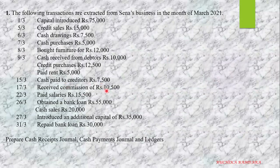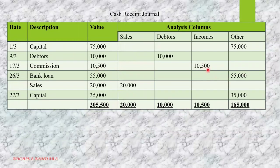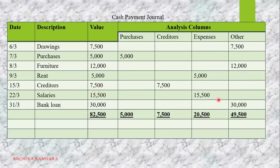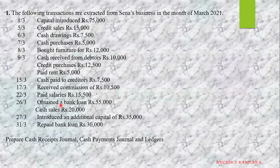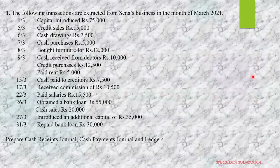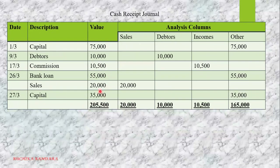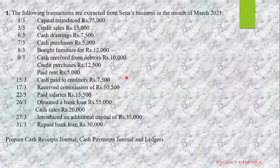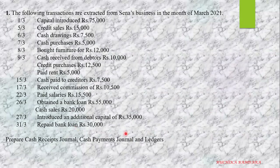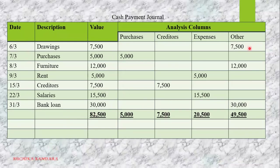Received commission $10,500 — receipt journal. Commission received is an income, so put it under the income column. Paid salaries $15,500 — payment journal, expense column. Obtain a bank loan $55,000 — receipt journal, writing bank loan. Since it's a non-current liability, put it under the other column. Cash sales $20,000 — receipt journal, $20,000 under the sales column. Introduced additional capital $35,000 — receipt journal, other column. Repaid bank loan $30,000 — payment journal, $30,000, other column.